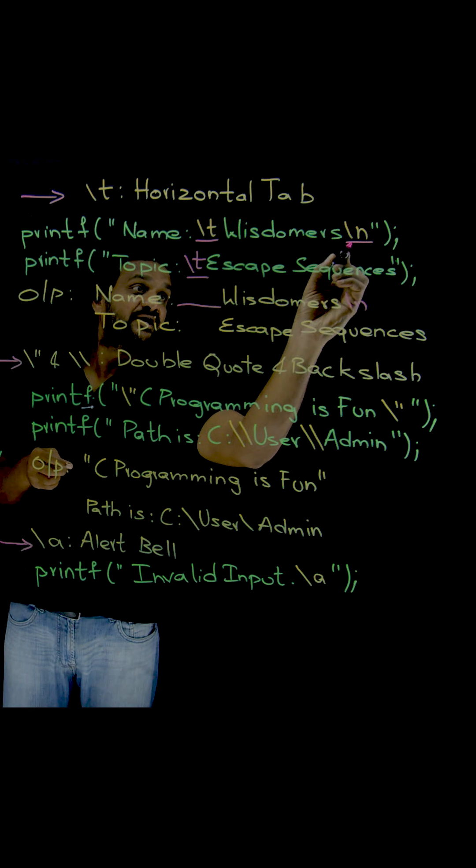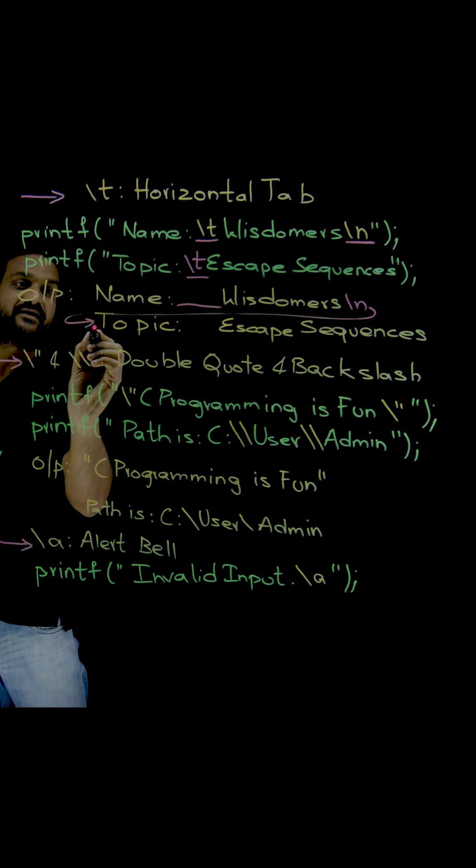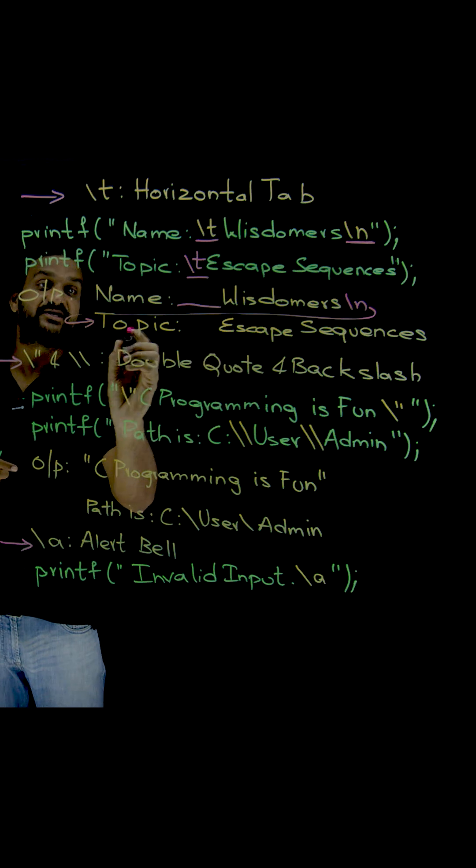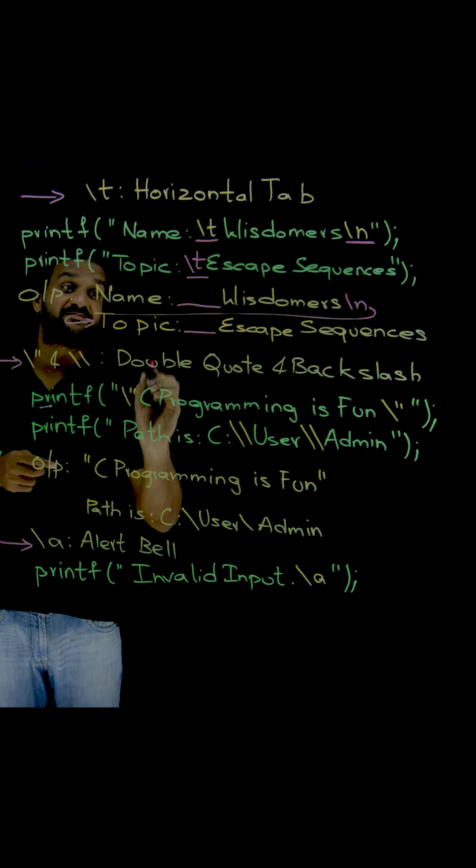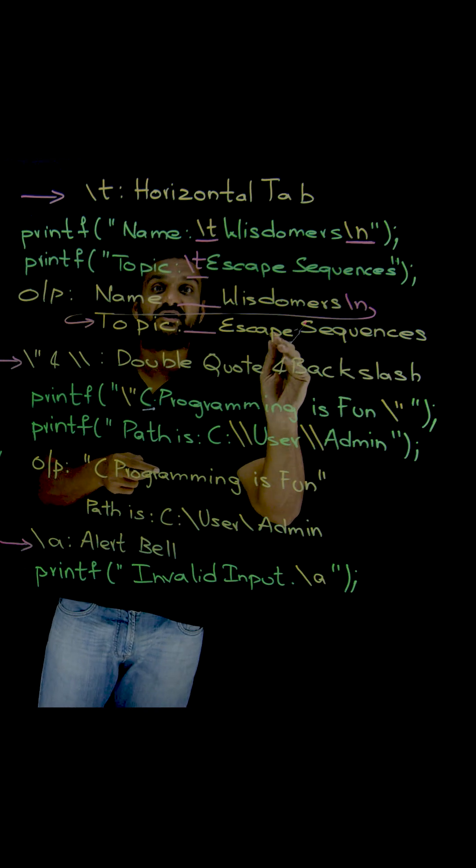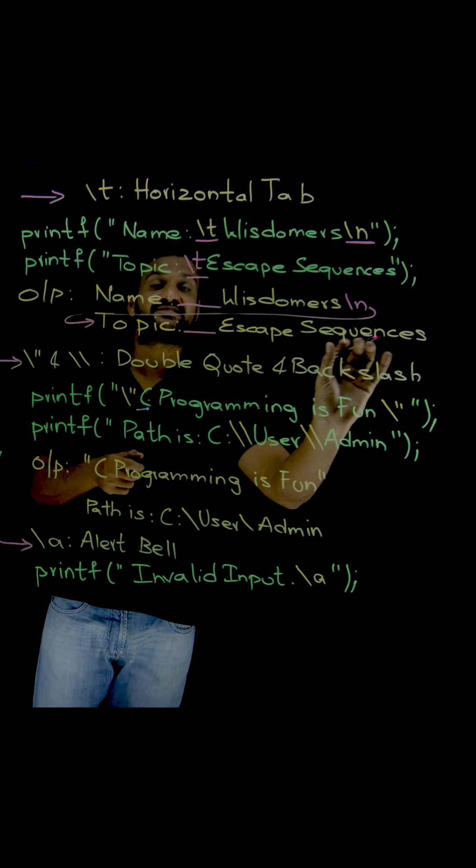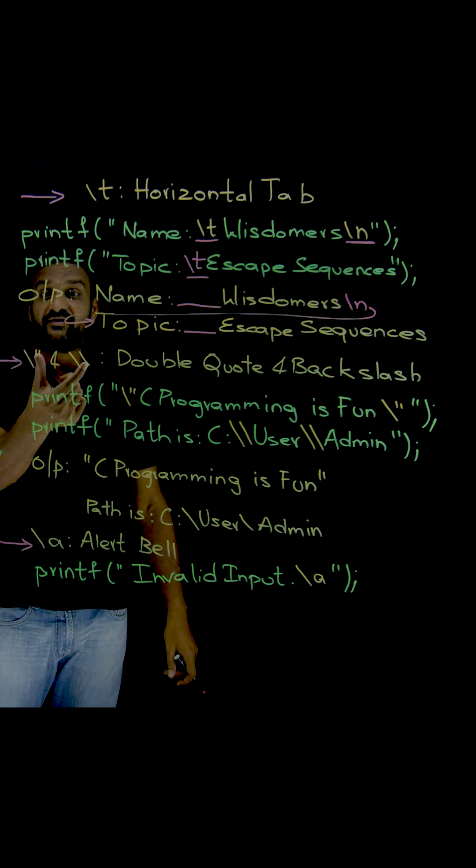After this, a new line got executed. The cursor has been moved on to this line, and now this line is getting printed. Here, topic and a tab space has been created, and after that, the content of the printf is getting printed, which is escape sequences.